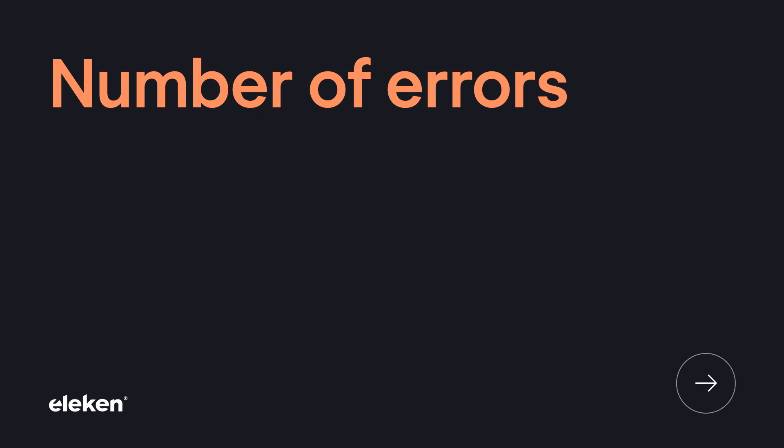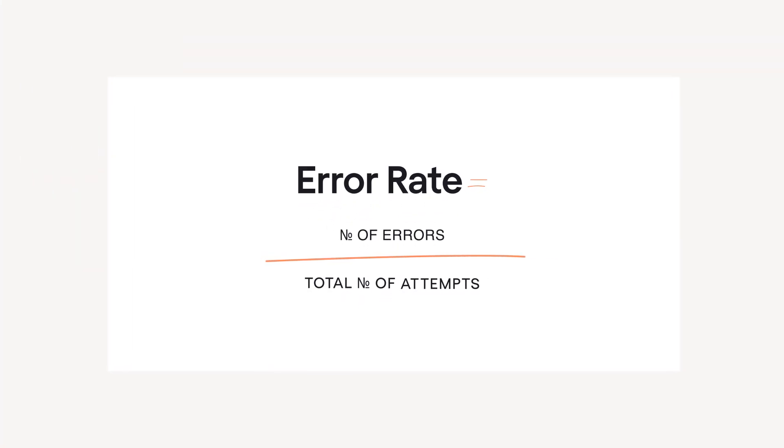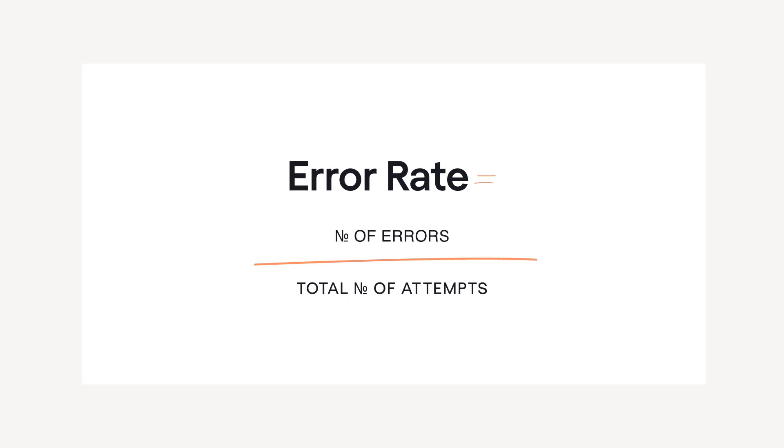Now let's move to the second usability testing metric — number of errors. In user testing, an error is any wrong action performed while completing a task. There are two types of errors: slips and mistakes. Slips are errors made with the right goal, for example a typo when entering the date of birth. Mistakes are errors made with the wrong goal, like entering today's date instead of the birth date. There are two ways of measuring errors. Measuring all of them gives us an error rate. To calculate it, we find the total number of errors and divide it by the number of attempts. It is recommended to count every error, even repetitive ones — for example, if a user tries to click an unclickable zone more than once, count it each time.